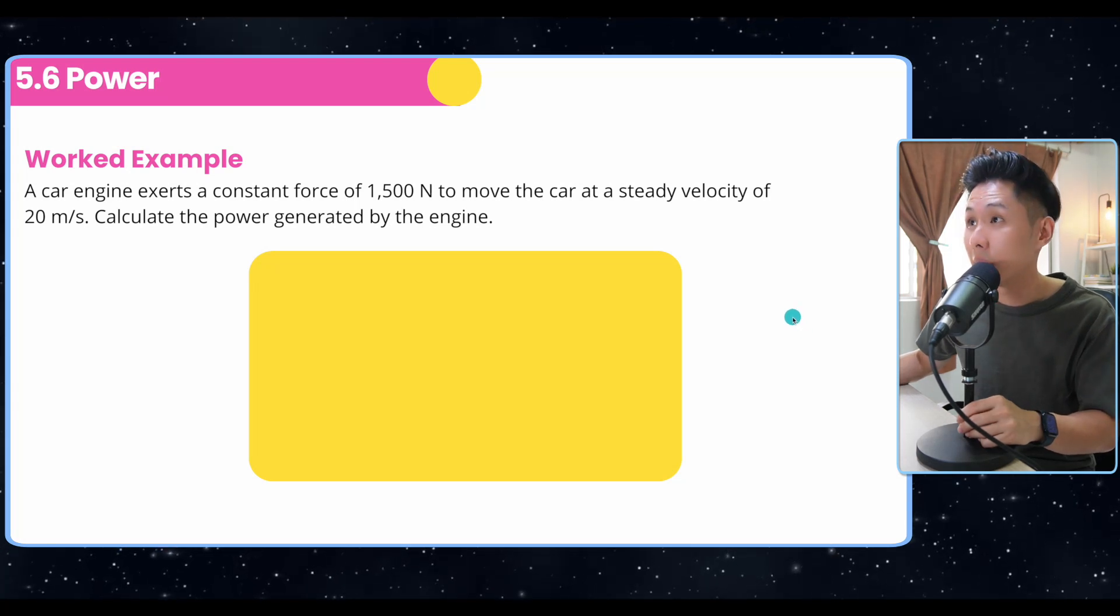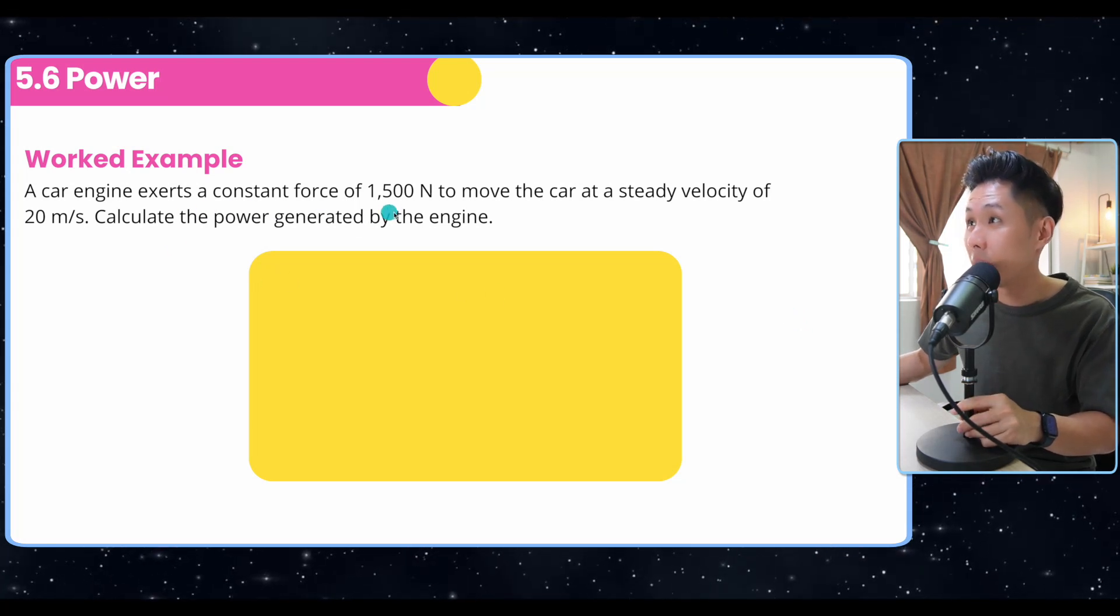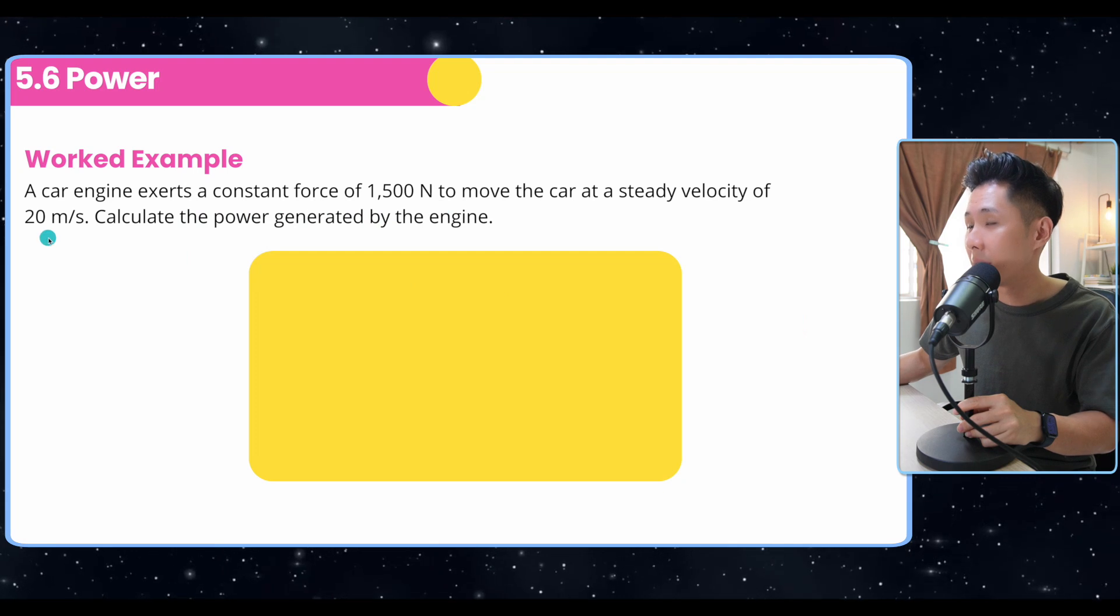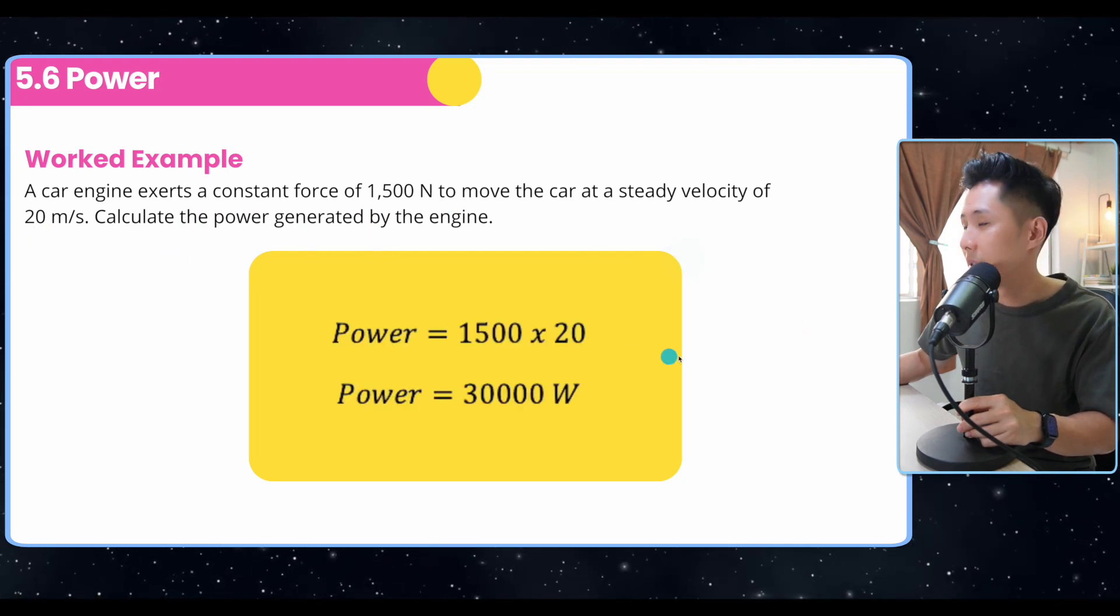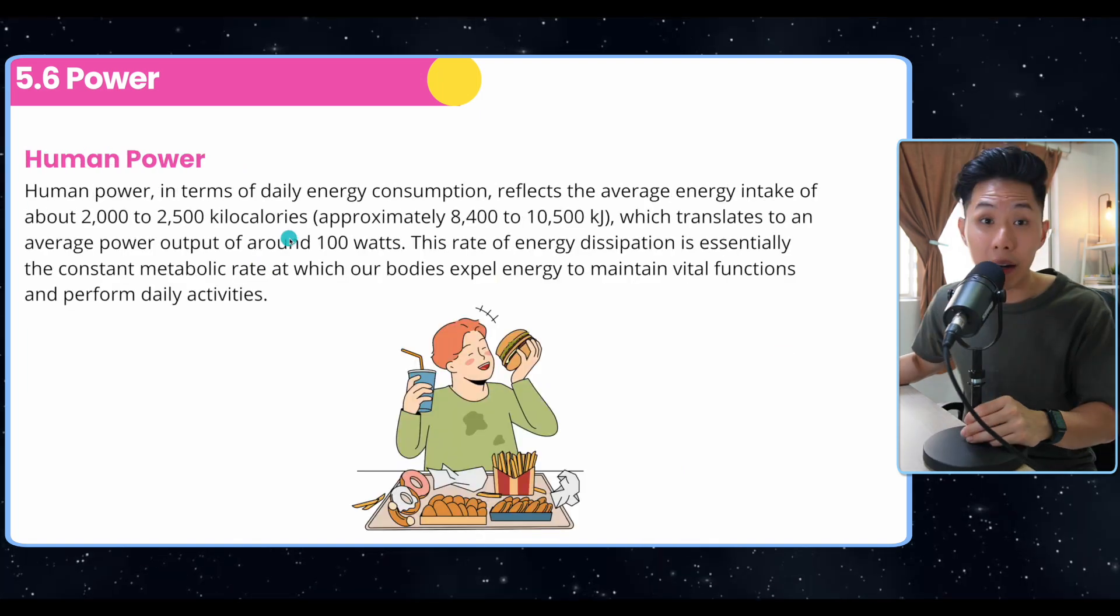So let's solve a worked example. A car engine exerts a constant force of 1500 Newton at a velocity of 20 meter per second. Calculate the power generated. So to do that, we can just multiply the two values together.